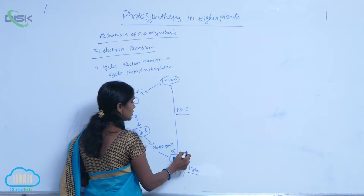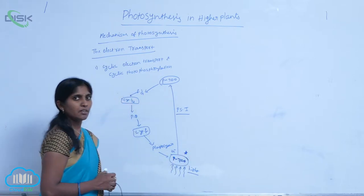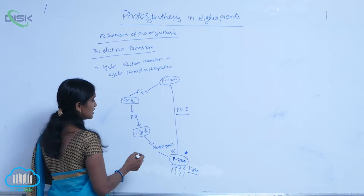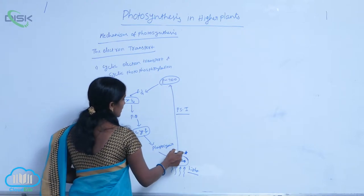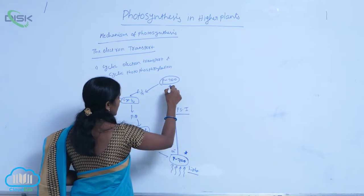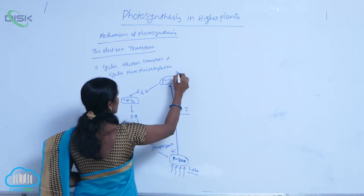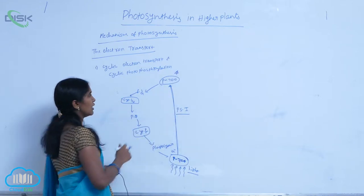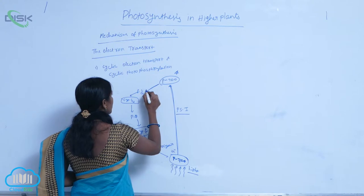The excited P700 releases two electrons, which are then absorbed by ferredoxin.